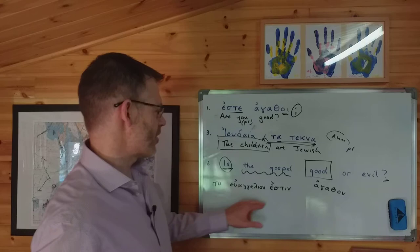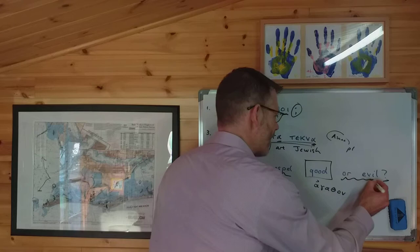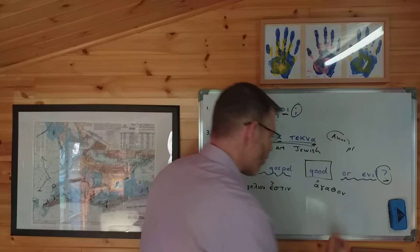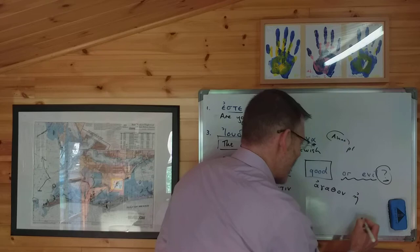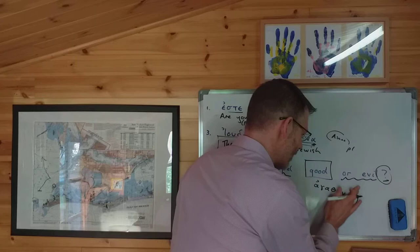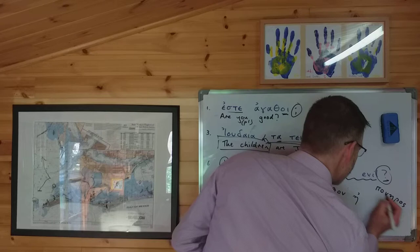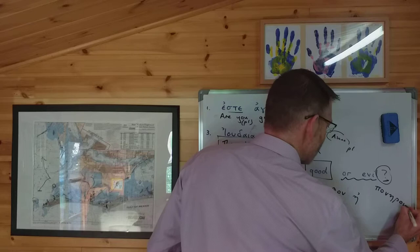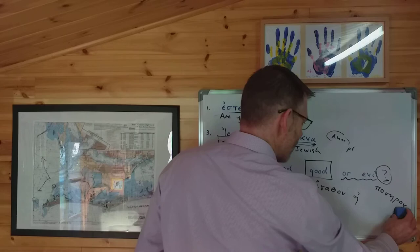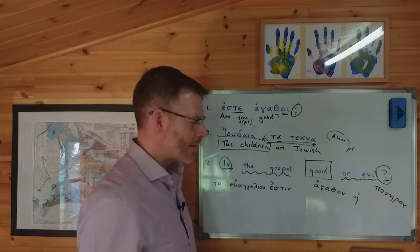A couple of extra steps: we need to add 'or evil', then add the question mark at the end. What's the Greek word for 'or'? It's eta — not eta as in the feminine article in the nominative singular, but eta is the word for 'or'. And of course 'evil' is poneros. Again, it needs to be neuter nominative singular, so not poneros but poneron. So the gospel is good or evil — then we put the question mark at the end.